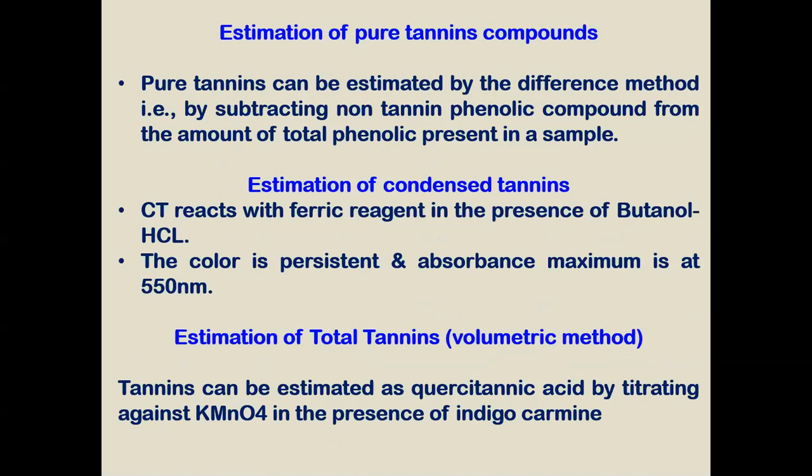Condensed tannin can be estimated by reaction with a ferric reagent in the presence of HCl; the color produced has maximum absorbance at 550 nm, and a spectrophotometer is used for its estimation. Total tannin can be estimated by a titrimetric method, where tannin is estimated as purified tannic acid by titrating against KMnO₄ in the presence of HCl.